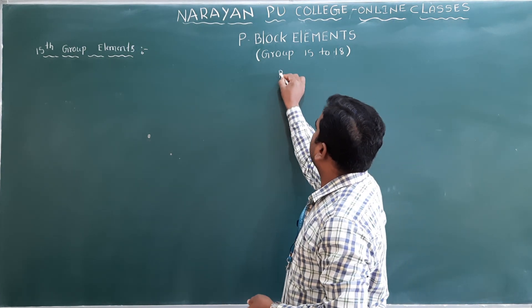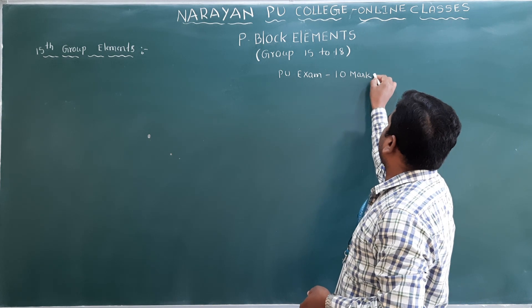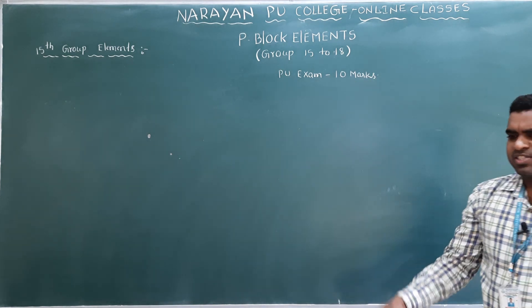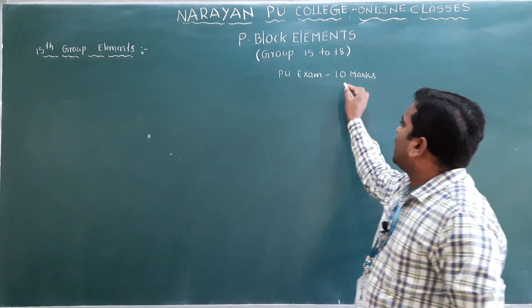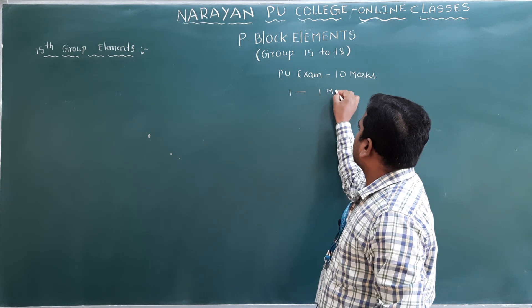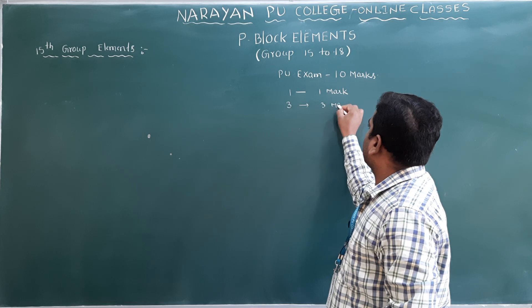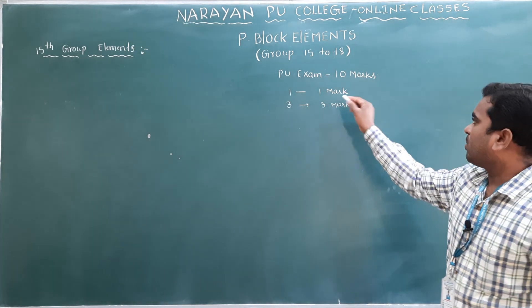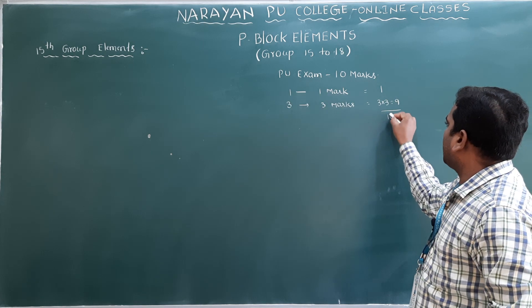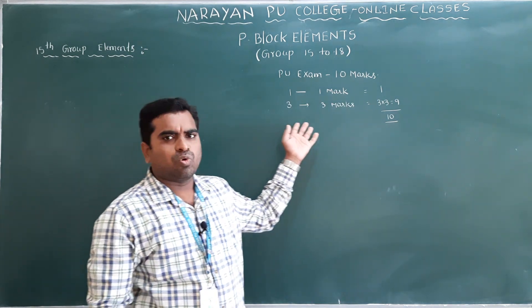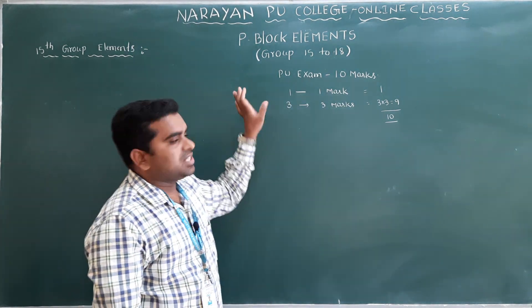How many marks for the PU examination? You will get 10 marks from this chapter - it is the highest weightage chapter in second year. Other chapters give 8, 7, or 5 marks, but this chapter gives 10 marks. You will get one question for 1 mark and three questions for 3 marks each - that is 1 plus 9, totaling 10 marks. In the CET examination you will also get around 4 to 5 questions from P-block elements.